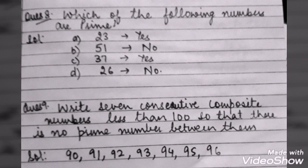Question number 9: Write 7 consecutive composite numbers less than 100 so that there are no prime numbers between them. And again you can use the sieve method to find out the answer. You can see from 90 to 96 there is no prime number in between.